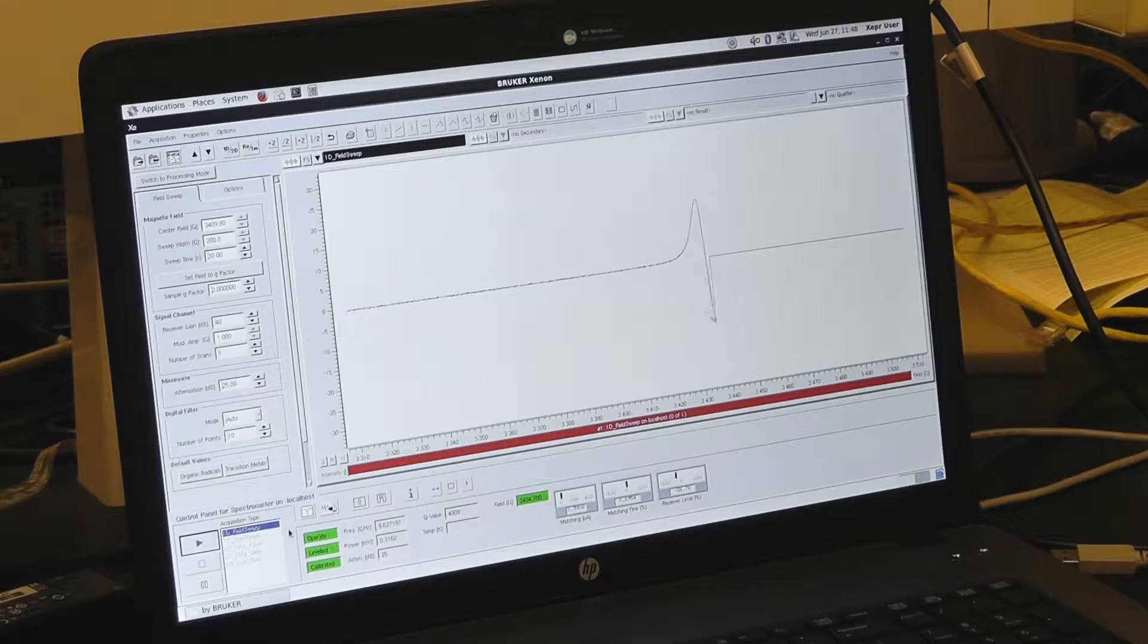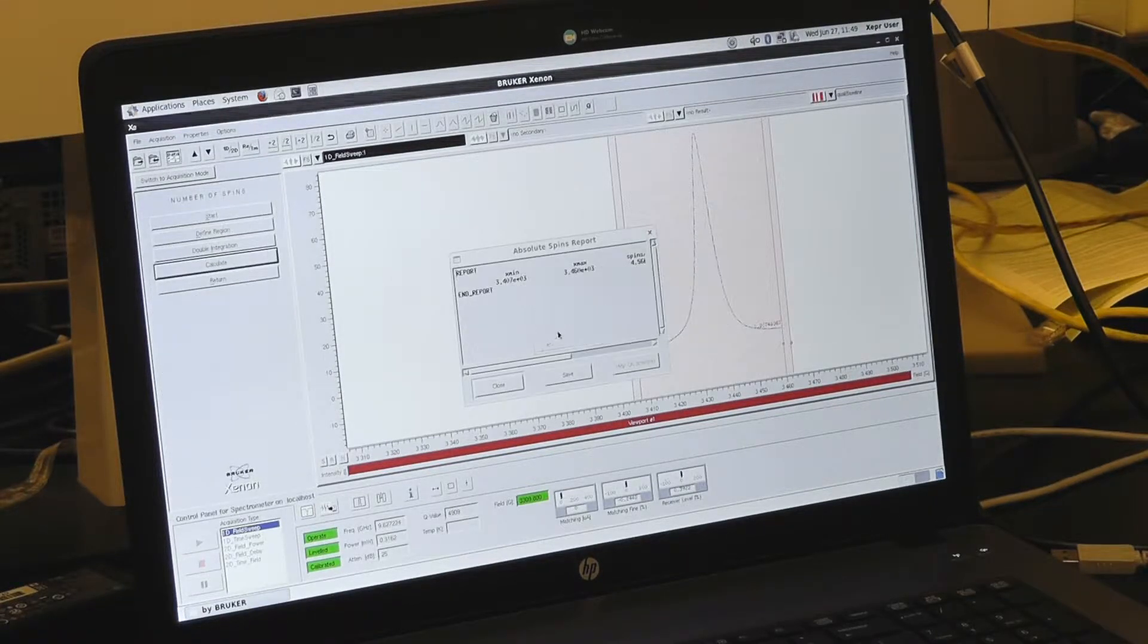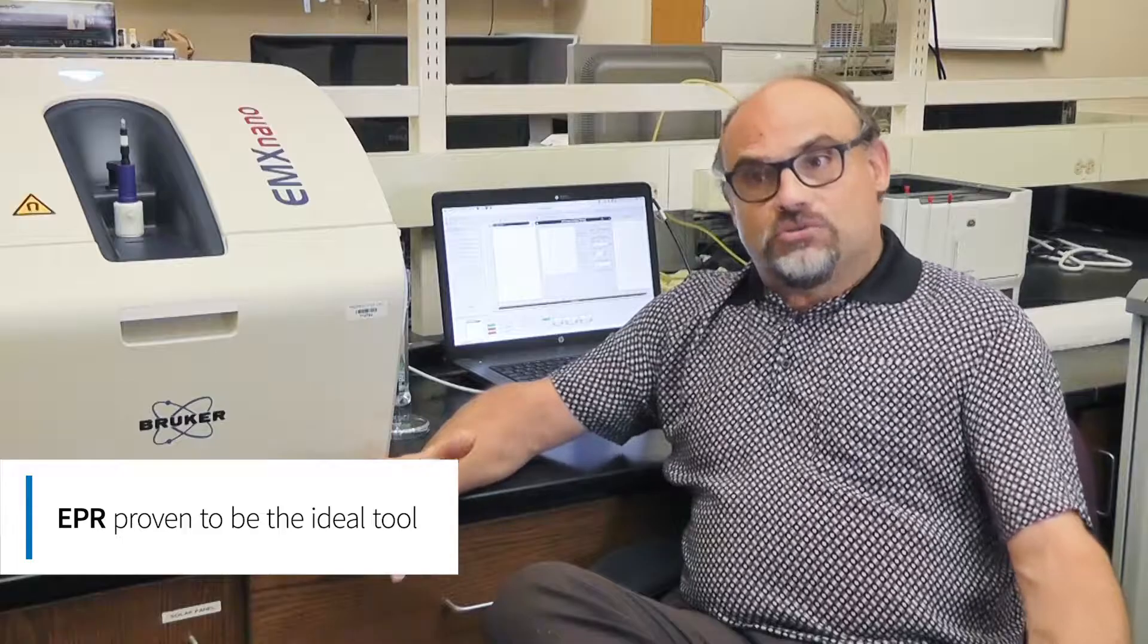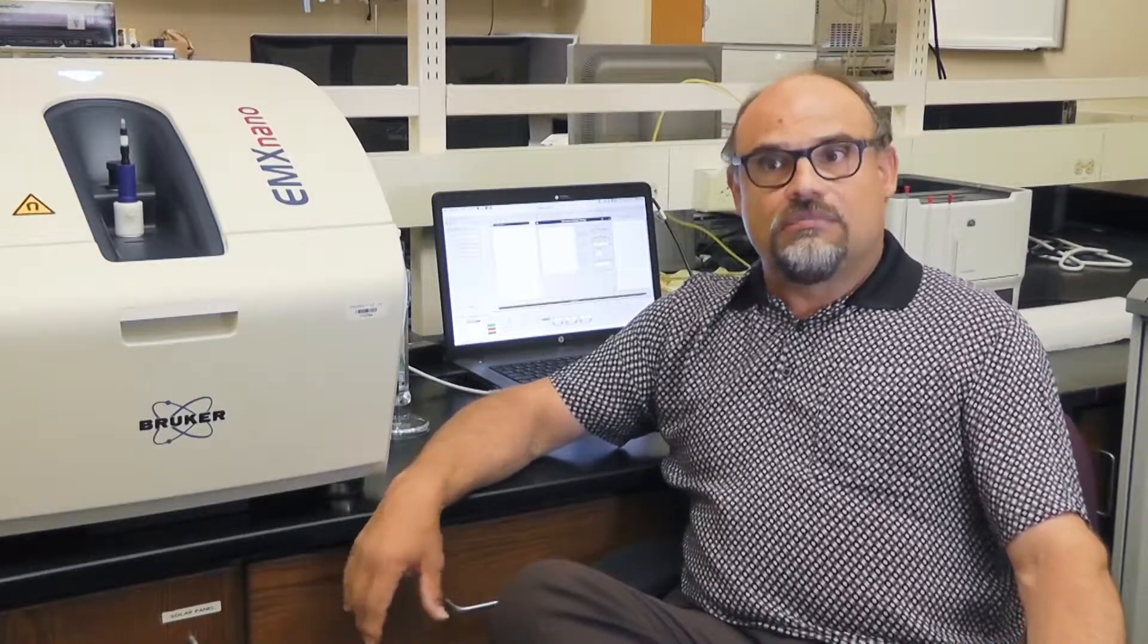The science community found the need for a much smaller bench-top instrument. Once we acquired this desktop instrument, I was actually fairly surprised at how much we could do with it. I was a little afraid about the sensitivity, but I was very surprised that we were able in almost every single instance to still measure our radicals.